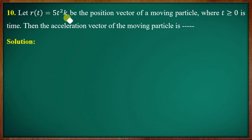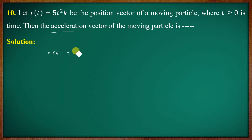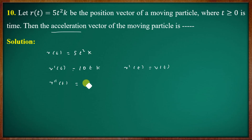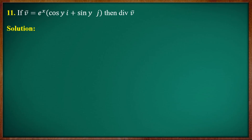Given r(t) = 5t²k is the position vector of a moving particle where t is time. The acceleration vector is the second derivative of r(t), so we compute r''(t) to find the acceleration.